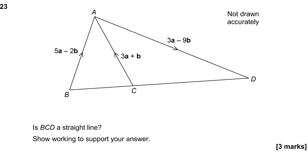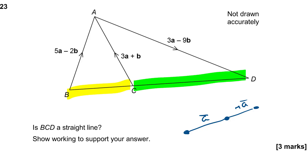Question 23: are B, C, D a straight line? Show your working to support your answer. Now if you want to show that three points are collinear — meaning they lie in a straight line — you define the vector from one to another, and show that the next vector is some multiple of the same vector. So we need to find vector BC and vector CD, and show that one is a multiple of the other.